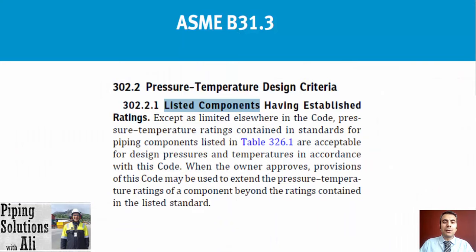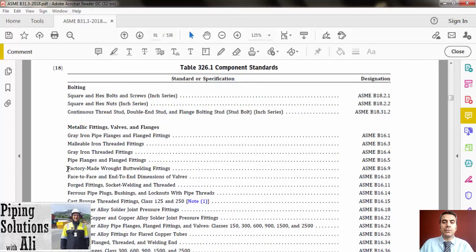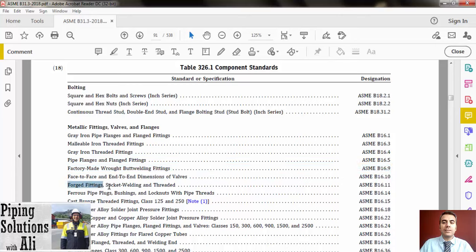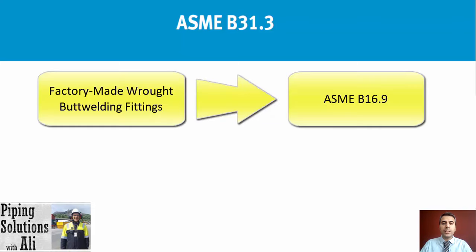In this course our focus will be on the pressure design of listed components in Table 326.1 component standards of ASME B31.3. The relevant standards are ASME B16.9 for factory-made wrought butt welding fittings and ASME B16.11 for forged fittings, socket welding and threaded. The application of those standards is related to the method used for manufacturing fittings and end connection types, so it's essential to review them.